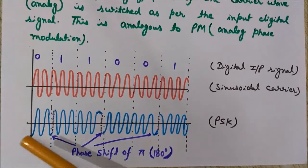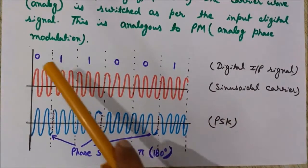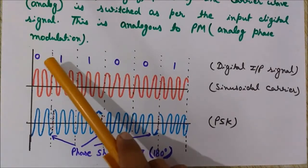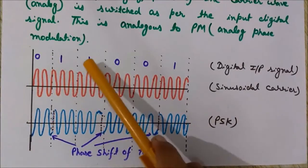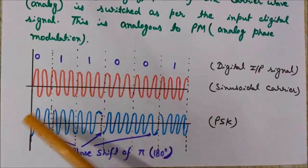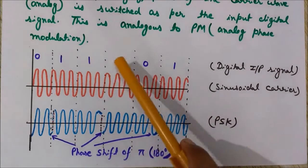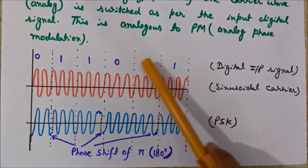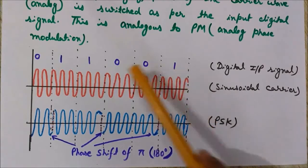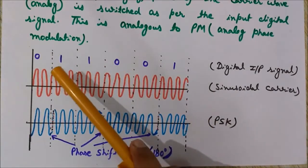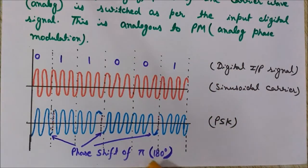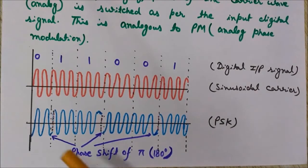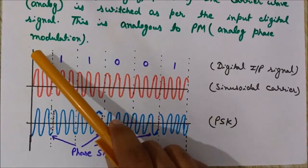Watch carefully. Whenever there is a change in the input signal — here it is changing from zero to one, here there is no change, at this place there is a change from one to zero, here no change, and here it has changed from zero to one — so whenever there is a change from zero to one or one to zero, a phase shift of pi, that is 180 degrees, takes place in PSK.